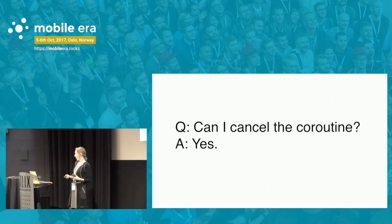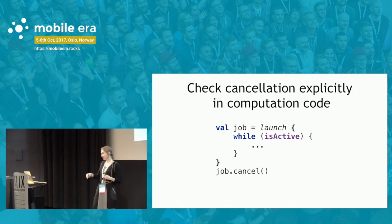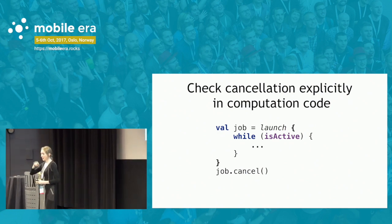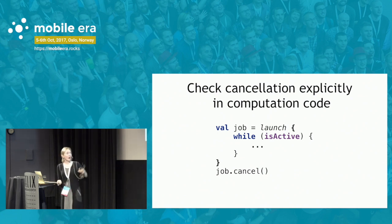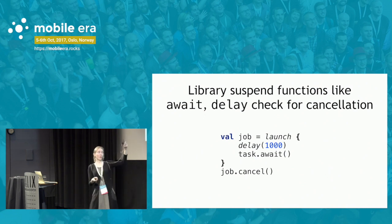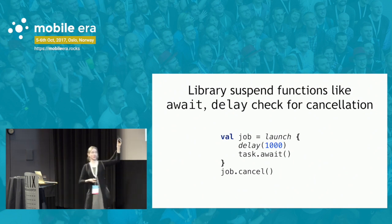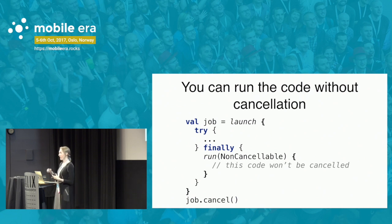You can cancel a coroutine. However, you have to check explicitly. A coroutine returns an object on which you can call cancel. But for the coroutine to actually be cancelled, you have to check inside the coroutine whether it's still active — especially if you have busy computational code. If you call library functions like delay or await, they will check for cancellation for you. You can also specify that a certain part of code — for instance, a finally block — should not be cancelled and must be performed regardless.